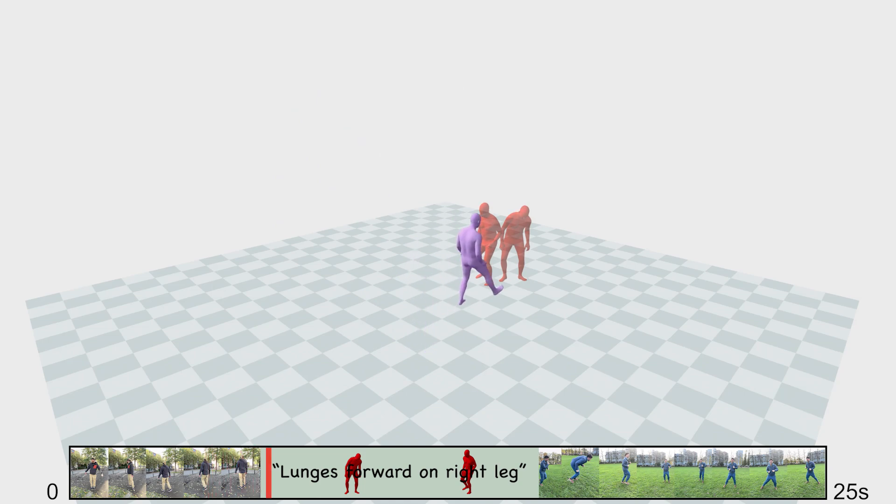By unifying motion estimation and generation within a single framework, Genmo ensures high fidelity to input conditions while maintaining plausibility and temporal consistency across all scenarios.